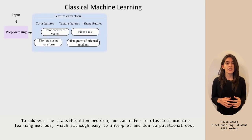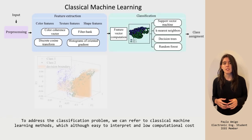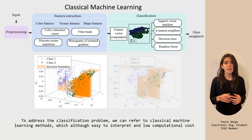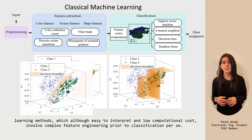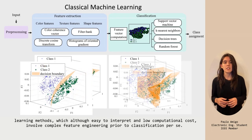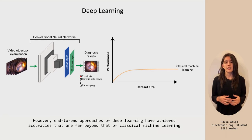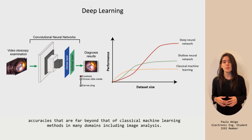To address the classification problem, we can refer to classical machine learning methods, which, although easy to interpret, involve complex feature engineering prior to classification. However, end-to-end approaches of deep learning have achieved accuracies far beyond that of classical machine learning methods in many domains, including image analysis.